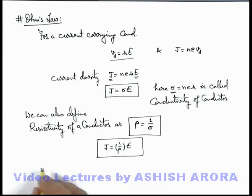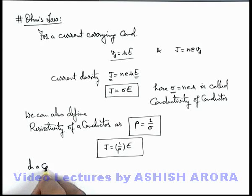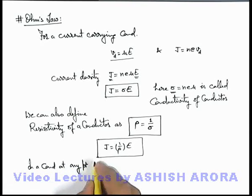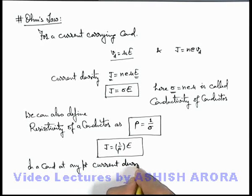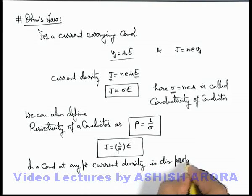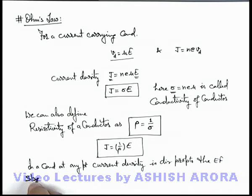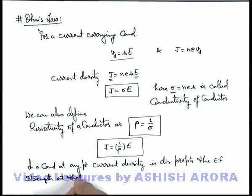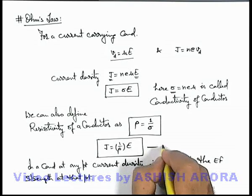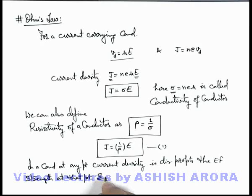We can write that in a conductor, at any point, current density is directly proportional to the electric field strength at that point. This is given by Equation 1.